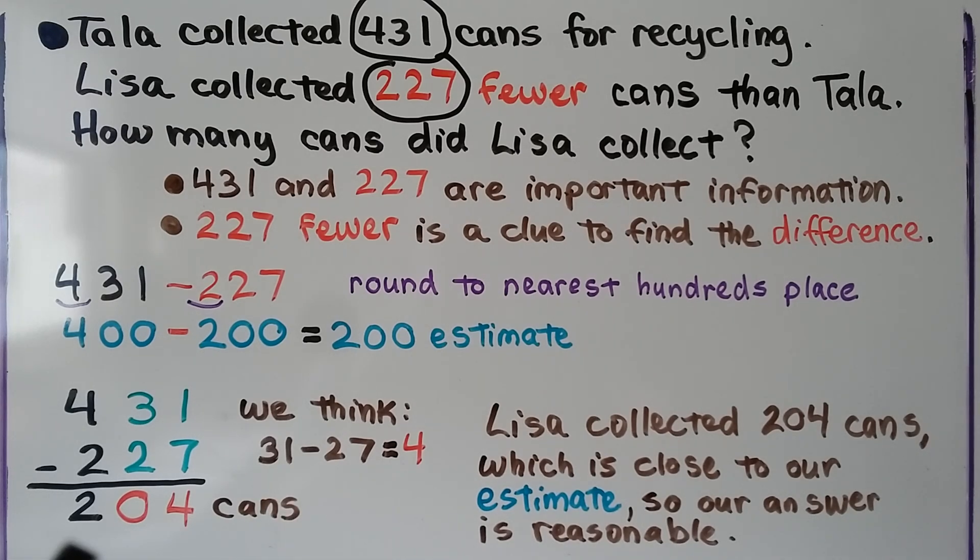We don't have any tens, so we put a 0 in the tens place and a 4 in the ones place. We do 400 minus 200 is 200. And we see that our answer is very close to the estimate, so it's reasonable. So Lisa collected 204 cans. It's very close to the estimate. We make sure we label our answer as cans, so that we know 204 what? 204 cans.